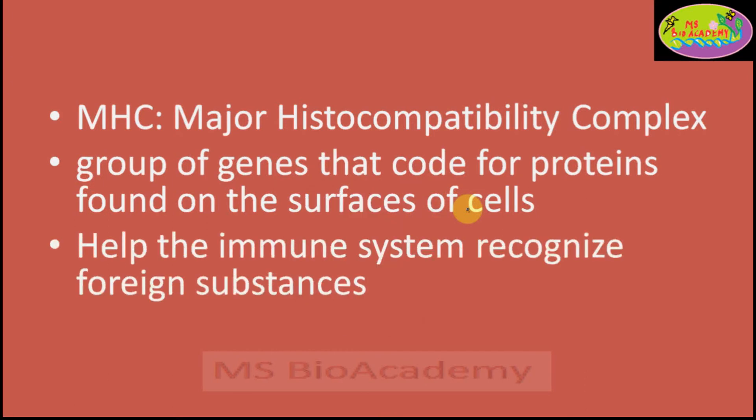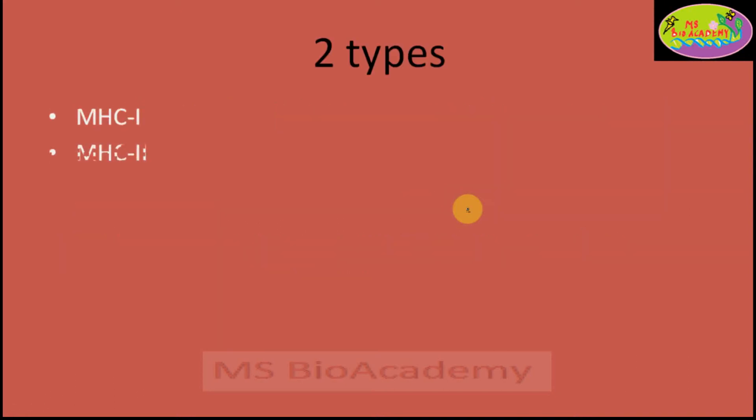MHC proteins are found on the cell surface. The role of the MHC is to help the immune system — or immune cells — in recognizing foreign substances. They help in presenting antigens, pathogens, or foreign substances so that they can be recognized by immune cells. There are two types of MHCs: class 1 and class 2.